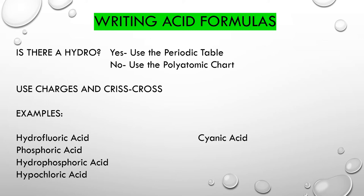That's all there is to it. But you have to remember: when you use the periodic table, -ic always applies. When you use the polyatomic chart, -ate becomes -ic and -ite becomes -ous. Now, writing acid formulas: if there is a hydro in the name, we're going to use the periodic table. If no hydro, we're going to use the polyatomic chart. We're going to use charges and crisscross just like before. Even though we have H, which is a non-metal with other non-metals, sometimes we use charges and crisscross like it's an ionic compound.